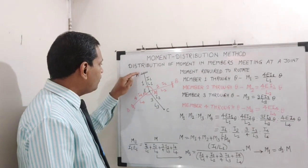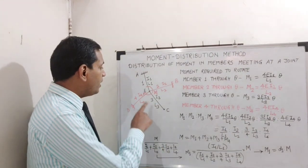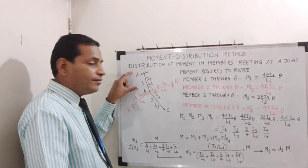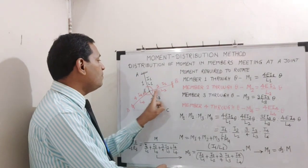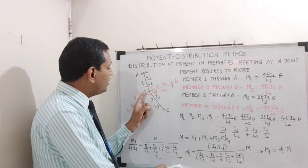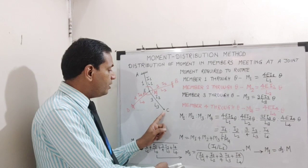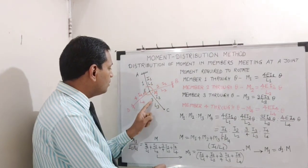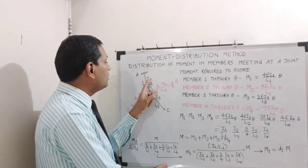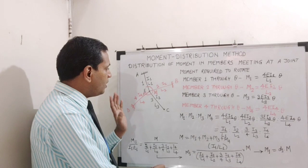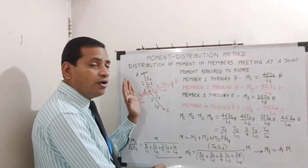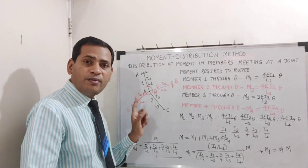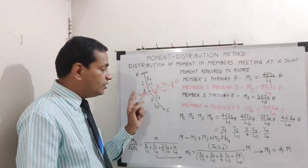We can see there are four members precisely which are meeting at joint E, which is a common joint. From joint E there is one member EA whose end is fixed, second member EB whose end is also fixed, then EC whose end is either a hinge, roller, or simply supported end, and fourth member ED whose end is also fixed. For each member I have given numbering 1, 2, 3, 4, their I values I1, I2, I3, I4, and lengths L1, L2, L3 and L4.